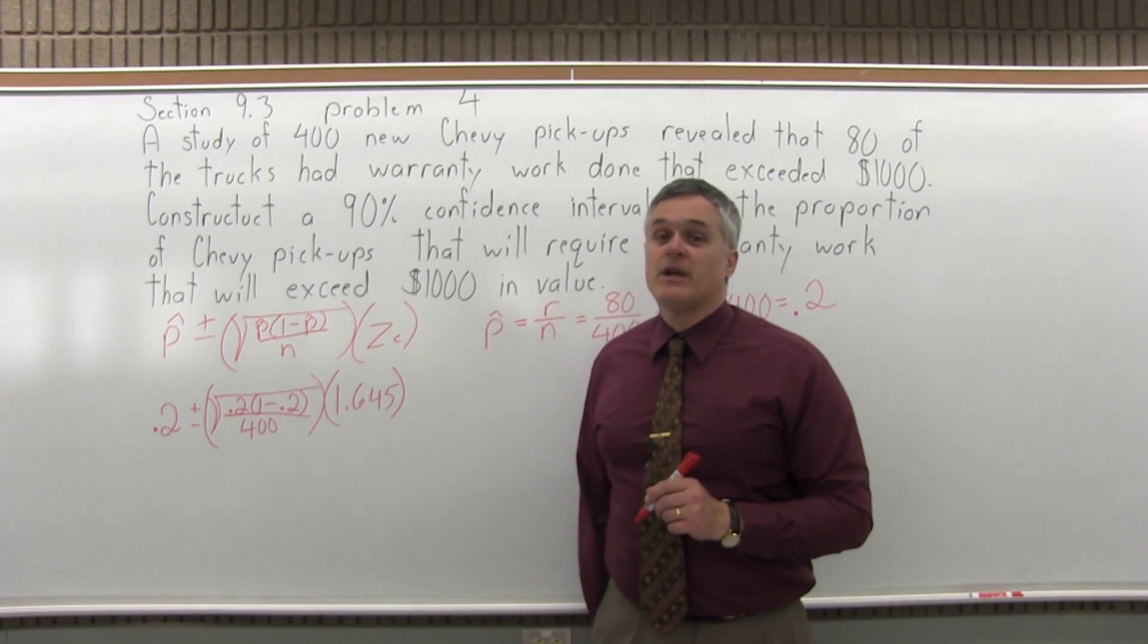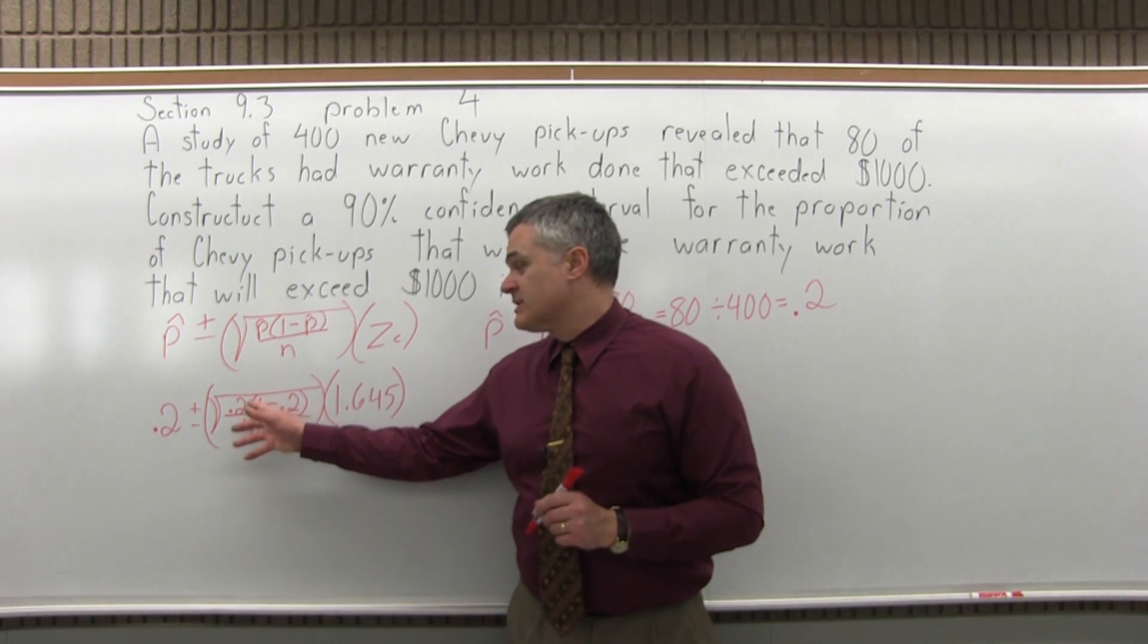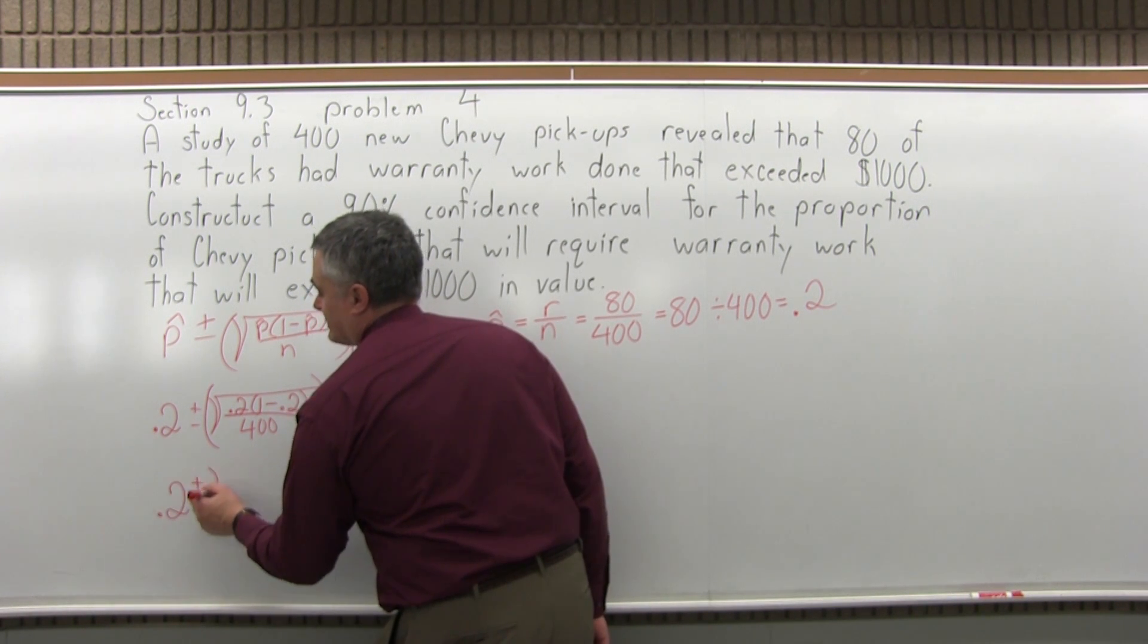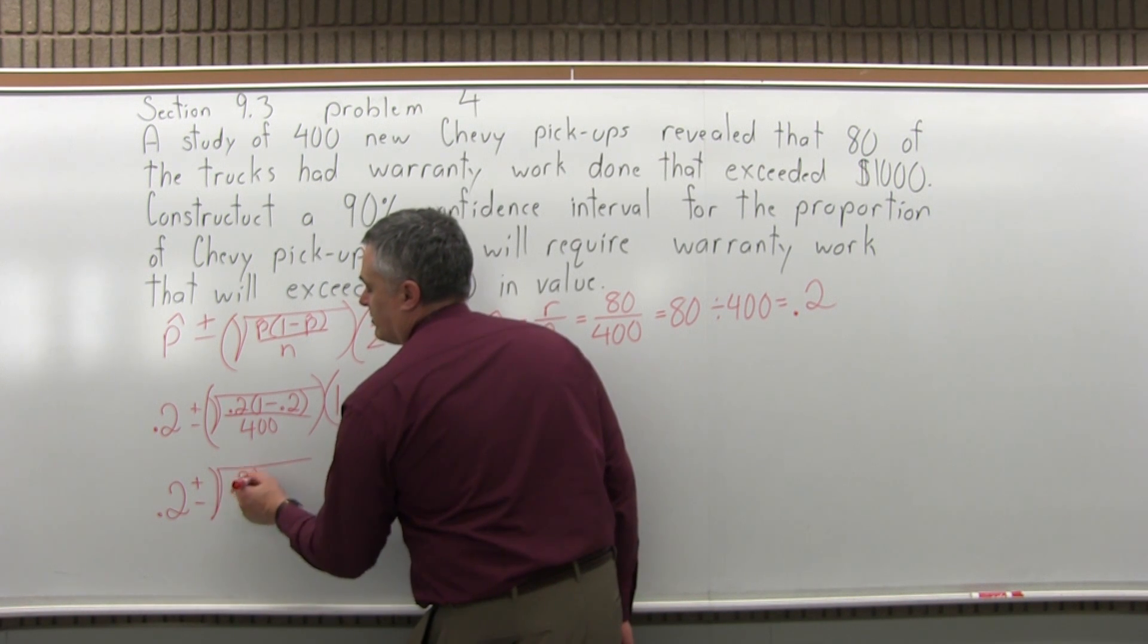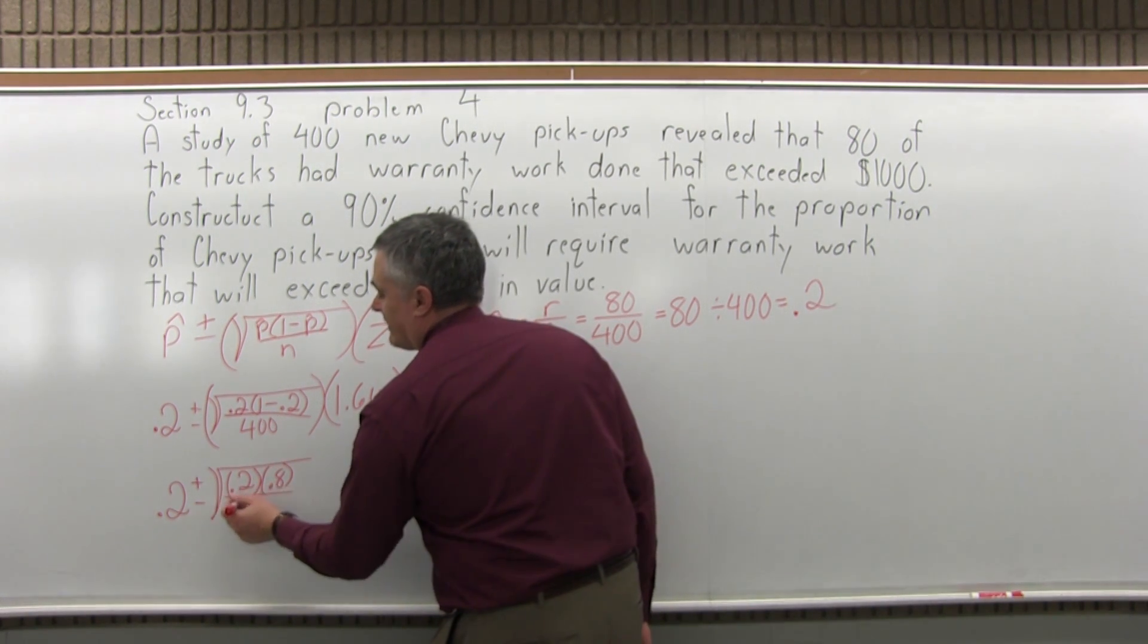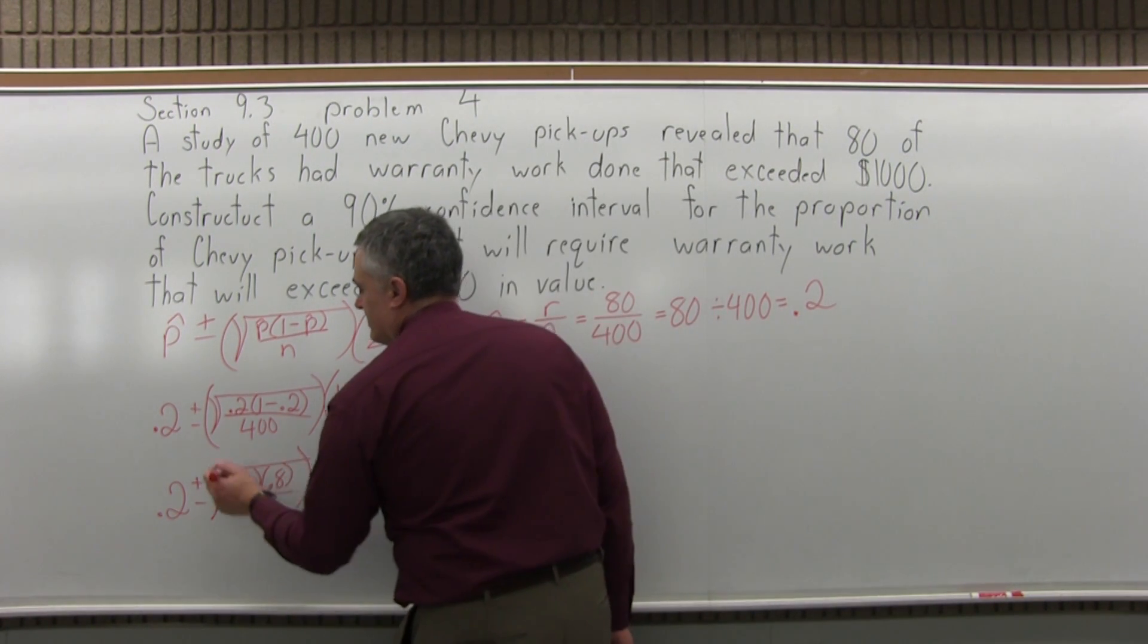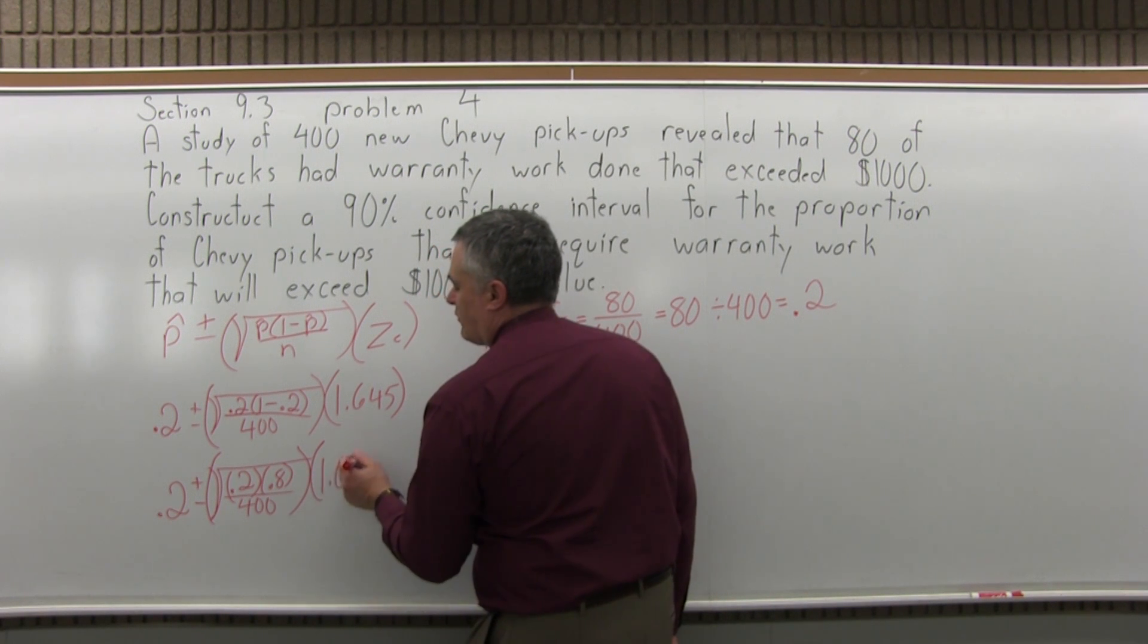So now the formula is filled in. Now we have to start doing the math. You have to start with your work in parentheses and the square root and get that out of the way first. So we'll have 0.2 plus or minus the square root of 0.2 times 1 minus 0.2 is 0.8, and that's over 400. That's all under the square root. The 400 is included in being under the square root. And times 1.645.